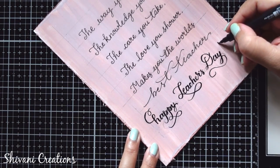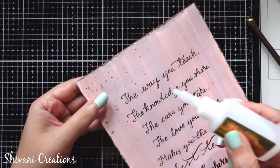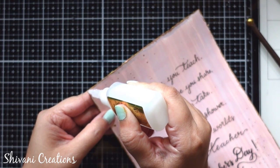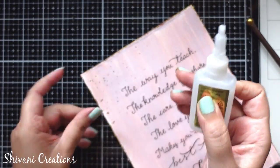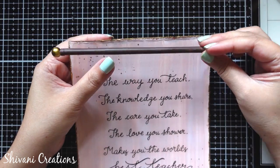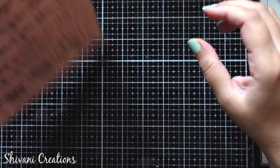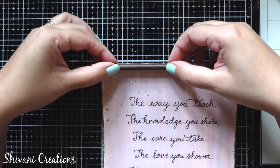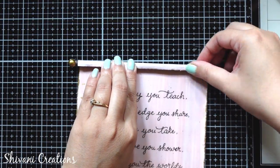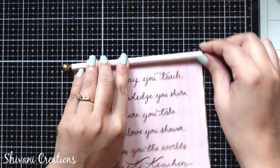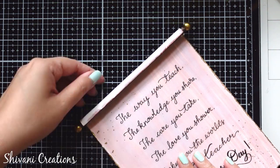Now I am again using my strong adhesive that is very quick and sticking the pipe on both edges. Just scrolling it little bit, adding some more glue and sticking it like this.